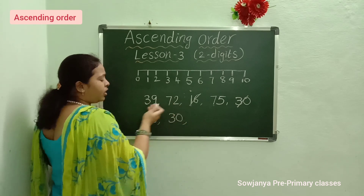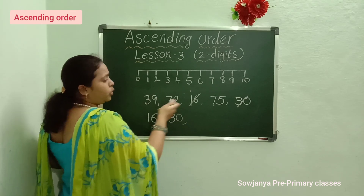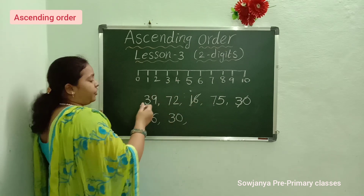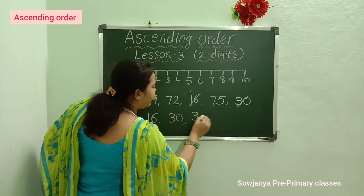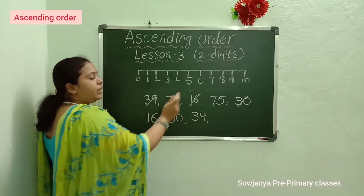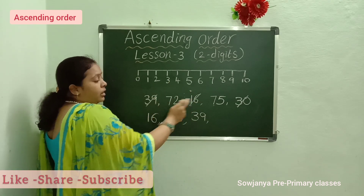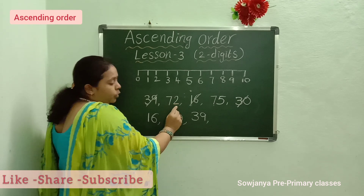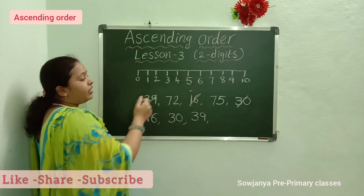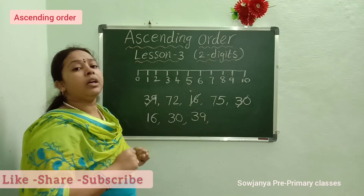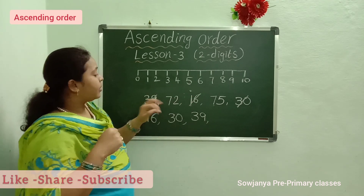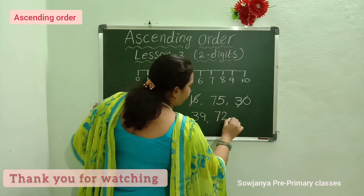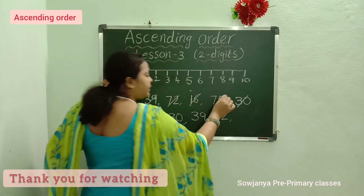Next, automatically we get 39. Now 72 and 75 are there, and 3 is smaller than 72 and 75. So cross out 39 and write 39 here. Now for 7 and 7, both are the same. So we observe the 1's place — 2 is there and 5 is there. Which is the small number? 2 is the small number. So write 72. The remaining number is 75.